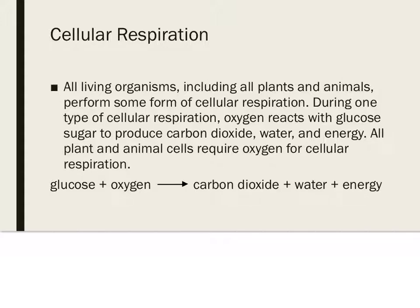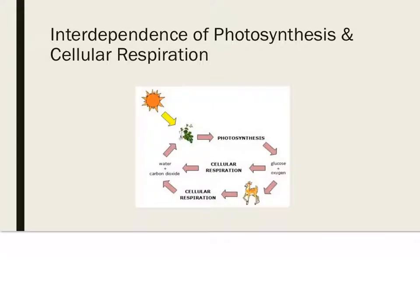During one type of cellular respiration, oxygen reacts with glucose sugar to produce or yield carbon dioxide, water, and energy. All plant and animal cells require oxygen for cellular respiration to happen. During cellular respiration, food molecules like glucose are being broken down. This shows how the processes of photosynthesis and cellular respiration work together. The chemical products of photosynthesis are the chemical starting materials for cellular respiration, and the products of cellular respiration are the starting materials of photosynthesis.